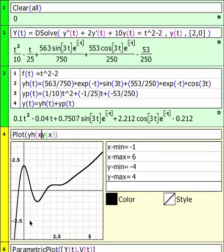Let's add the yh and the yp. The yh is the transient solution, the solution to the associated homogeneous problem. The yp is an example of a forced solution, a response to that forcing function.